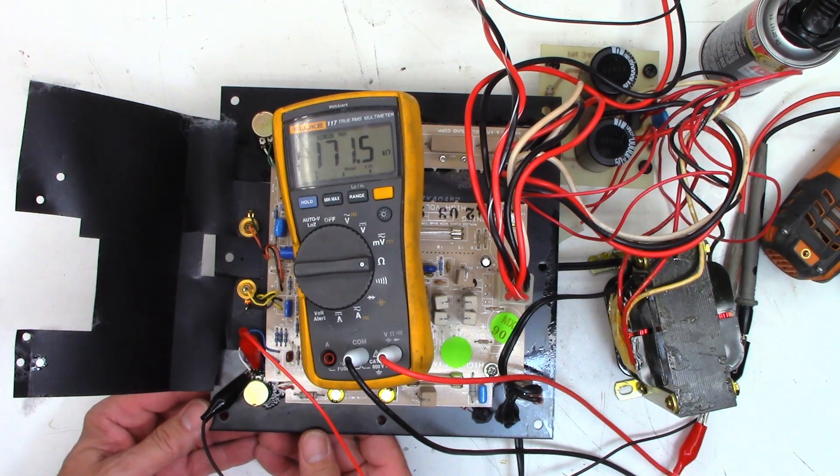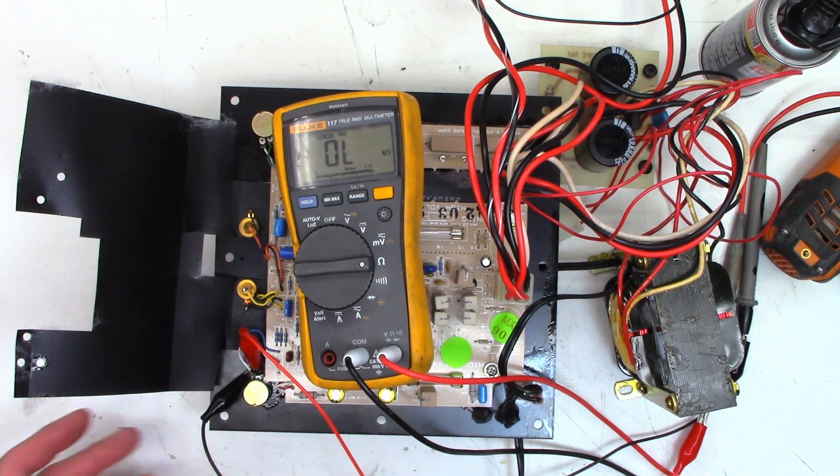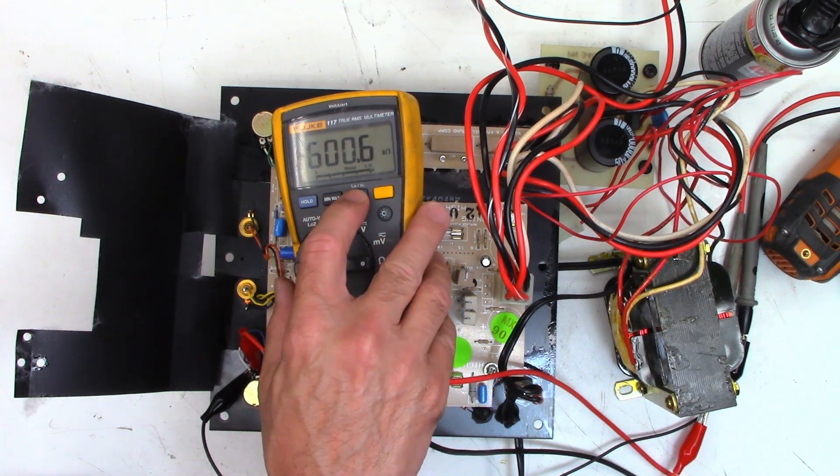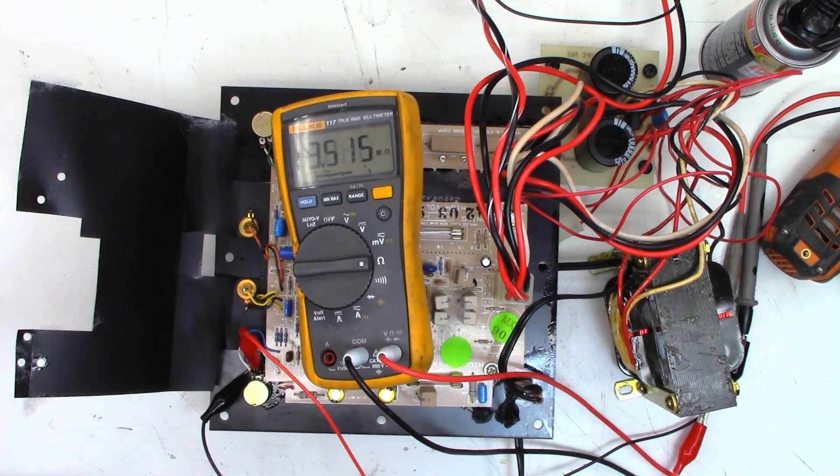See what the maximum resistance that it reads is. Well, right there, that's a problem. 171K on a 50K pot. 349K. 442K. Yeah, it's toast. There it is open. Still connected. Take min-max off. Put it back in auto range. And I've got 4 megs and dancing around. So, I'm going to bet that's probably going to be the problem.